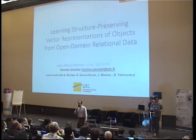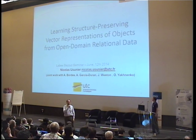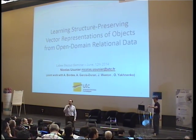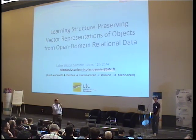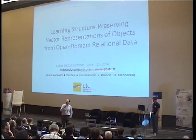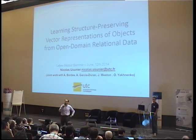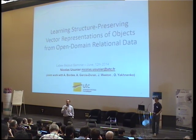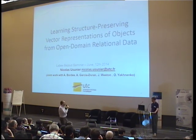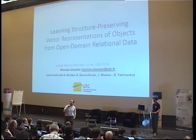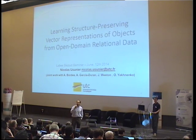Nicolas Usunier is maître conférences at Université de Technologie de Compiègne where he holds a chair d'excellence. He's done research on several topics. He's worked quite a bit on information retrieval and more particularly on ranking, where he proposed both applied and theoretical results. And he's worked on the topic he's going to talk about today, which is about extracting information about relations in data and semantics.